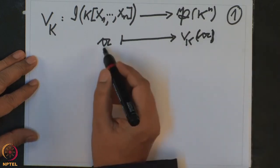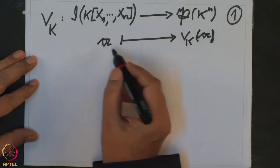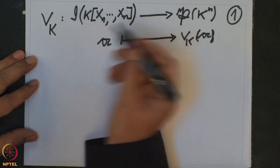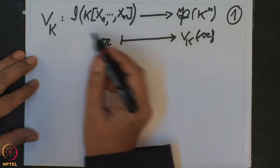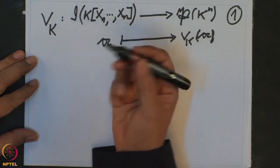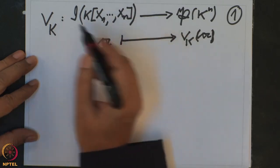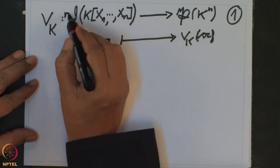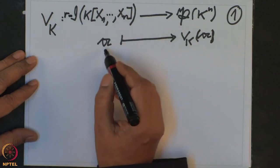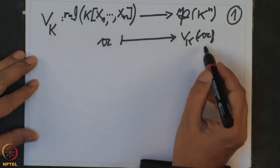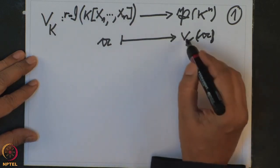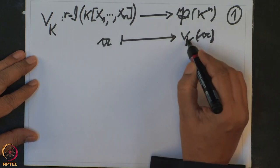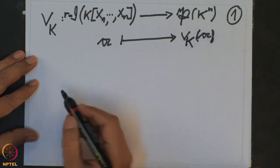Now actually I could have taken only radical ideals, not all ideals — I can restrict to radical ideals. I will write R here: R is for radical ideals, because an ideal and its radical ideal will give you the same set of points.